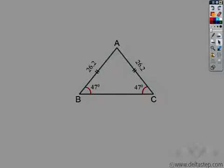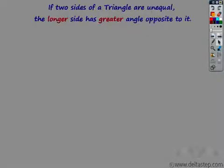We have seen that in a triangle, if two sides are equal then two angles also become equal. Here two sides are equal — 26.2 and 26.2 — so two angles are also equal at 47 degrees each. Equal sides contain equal angles and equal angles contain equal sides. Now what if these sides are not equal? If the sides are not equal, then the greater or longer side has a greater angle opposite to it. Let us try to prove this.